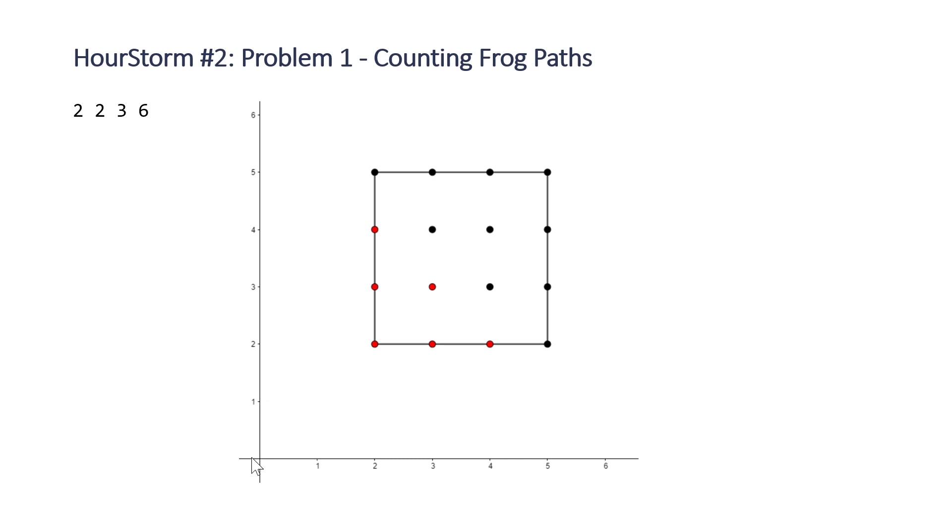It could spend all six seconds moving up which would result in the frog being up here. The next thing it could do would be to move up five and then move over one which would get it to here.